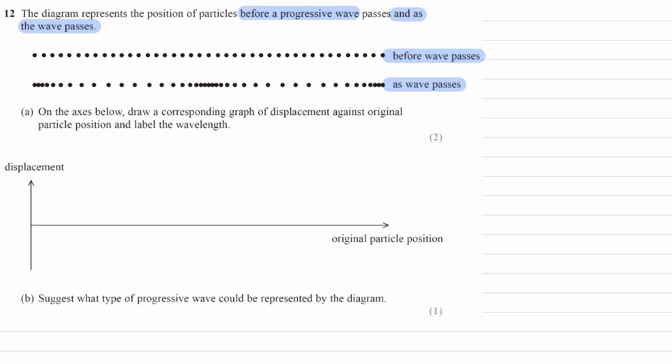On the axes below, draw the corresponding graph of displacement against original particle position and label the wavelength.